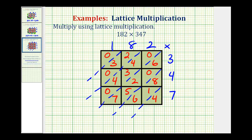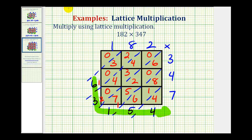Now we'll find the sum of the diagonals. Starting here we have four. Here we have eight plus one plus six — that's fifteen, carry a one. Six plus two is eight, plus five is thirteen, plus seven is twenty, plus one is twenty-one, carry a two. Four plus three plus four is eleven, plus two is thirteen, carry a one. Two plus three plus one is six. And this is just zero. So the digits of our product are six, three, one, five, four — which means 182 times 347 is equal to sixty-three thousand one hundred fifty-four.